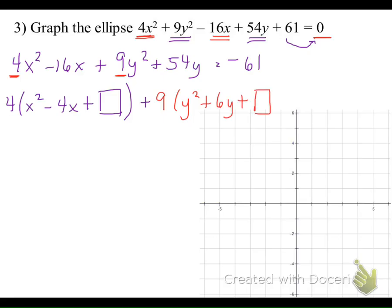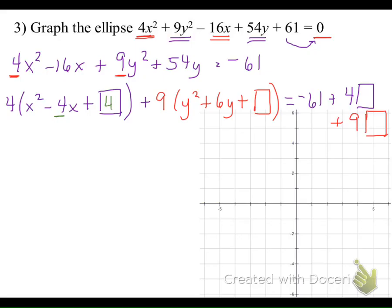We find the number to complete the square for both variables, keeping the equation balanced by multiplying the x magic number by 4 and the y magic number by 9. For the x's, b = -4: divide by 2 and square it — our magic number is 4. For the y's, b = 6: divide by 2 and square — our magic number is 9. We add these on both sides.